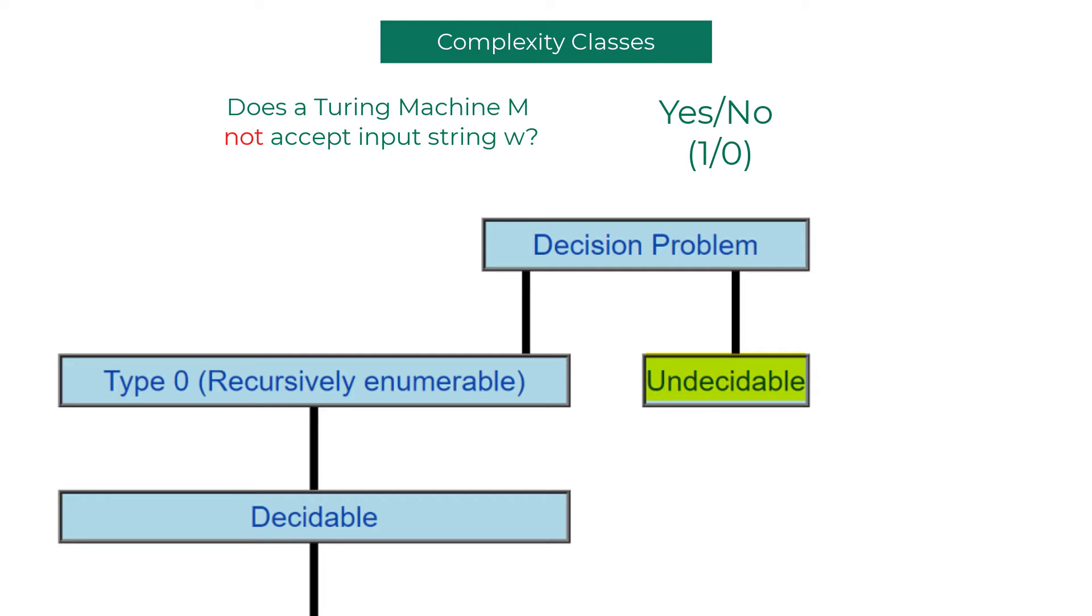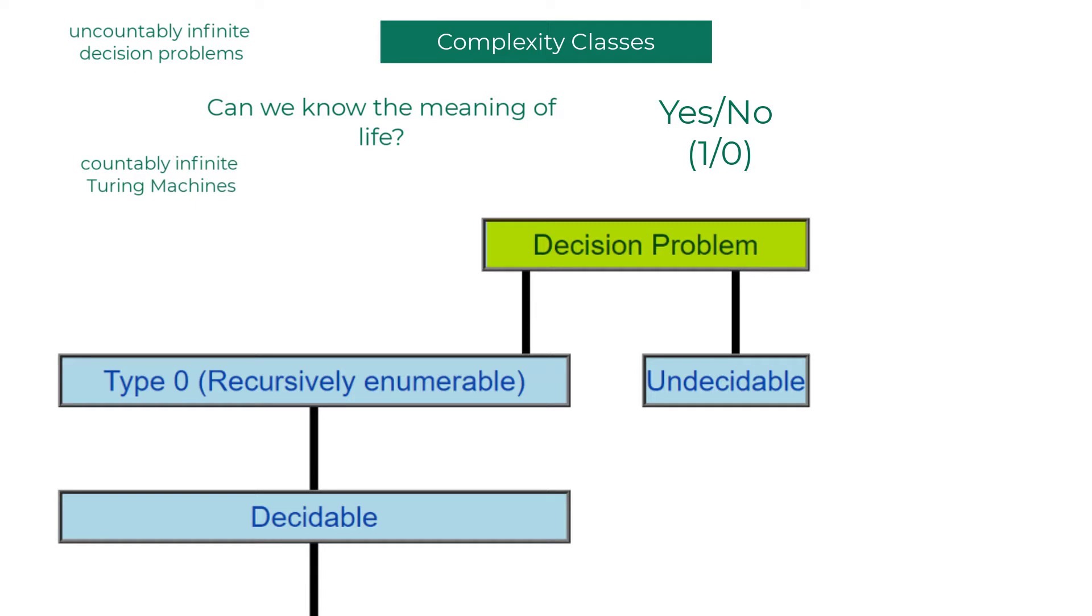You should know that there are uncountably infinite decision problems out there and there are only countably infinite Turing machines to solve each of them, which means many of life's problems are unsolvable by computers.